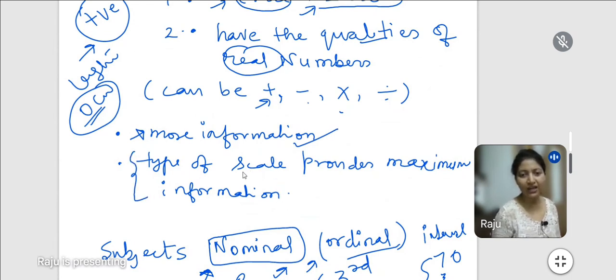which data in which scale is nominal, ordinal, interval, or ratio. Maximum information is provided in this property.